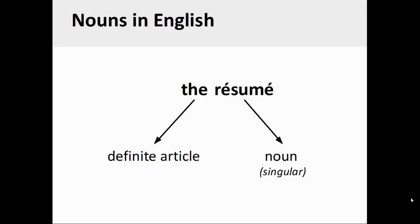As you see with the example on the screen, nouns in English usually do not manifest any grammatical gender, although they do distinguish between singular and plural forms. The definite article that precedes both singular and plural forms of the noun is always the.